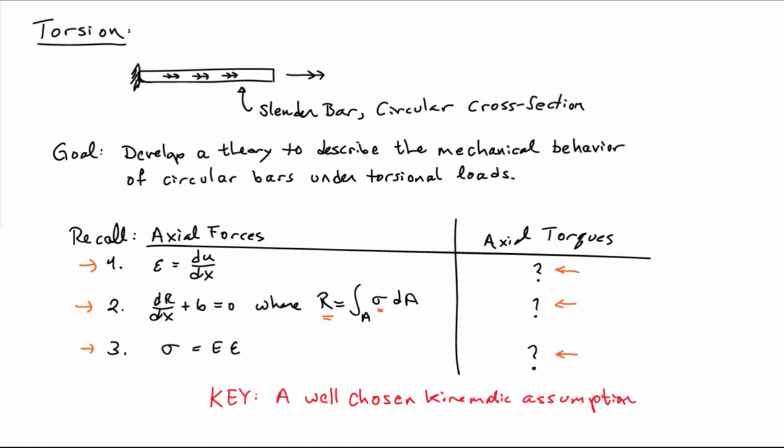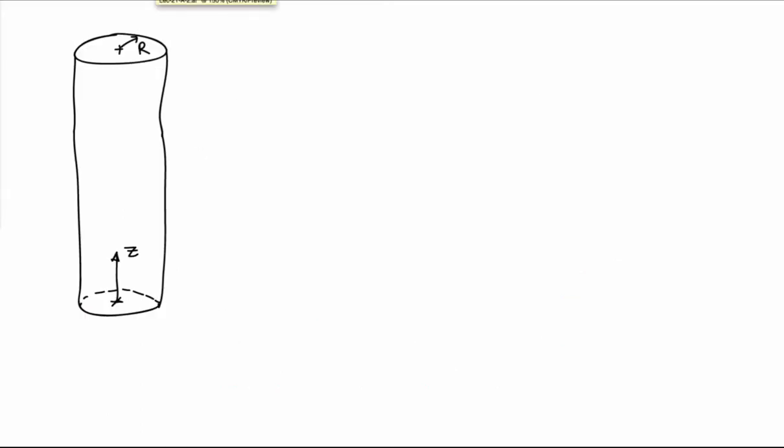We want to build a complete system of equations just like we had before and try and build on using our notion of the full three-dimensional theory. And the key, really, to being able to do this is a well-chosen kinematic assumption. And that kinematic assumption is built off what we've just observed in the experiment where I've twisted the bar and watched the motion. So let's have a look at that. I've drawn in the bar here that we had before. I'll measure position using the z-coordinate from the bottom of the bar upwards. And the bar will have a radius of capital R.